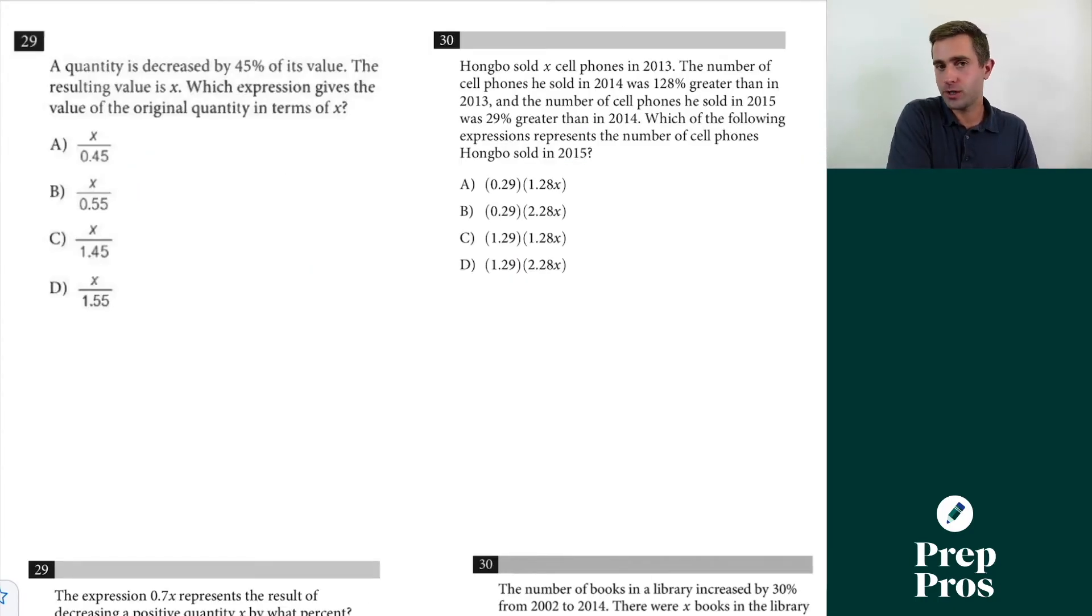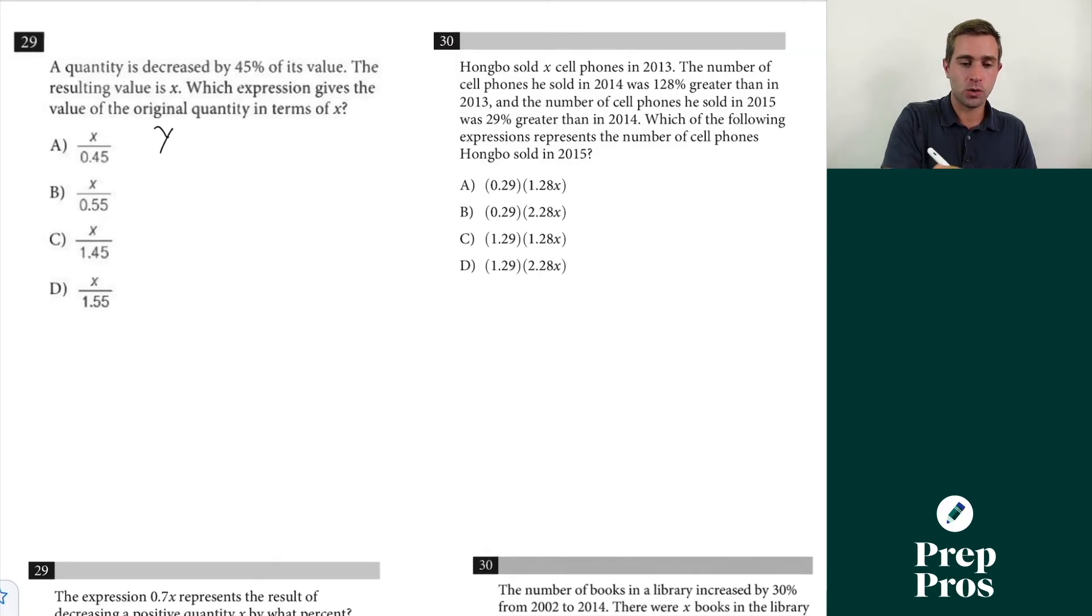For 29, and this is going to be the trickiest of the examples here, a quantity is decreased by 45% of its value. The resulting value is x. Which expression gives the value of the original quantity in terms of x? To make this a little bit easier, we're just going to say that our original quantity is going to be y. What we know is we're decreasing y by 45% of its value, and then it's going to equal x.